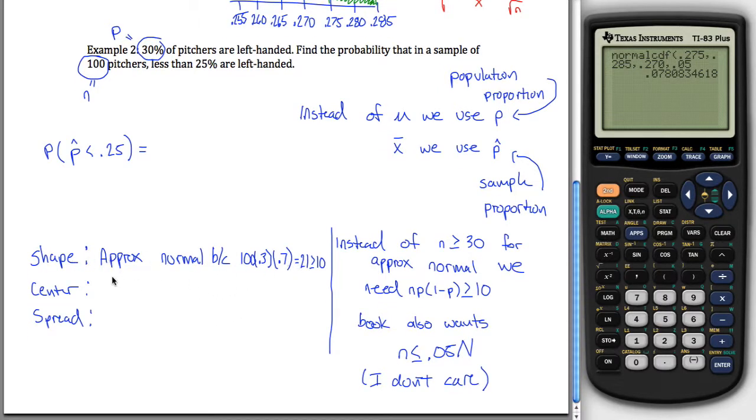So anyways, we got our shape is approximately normal. Our center, what's kind of nice is our center will always be given by P. So P equals 0.30.